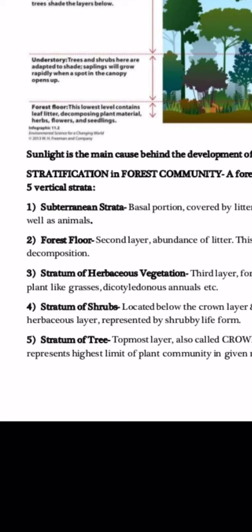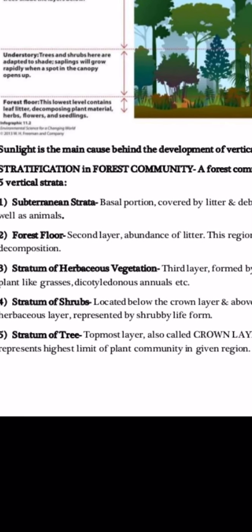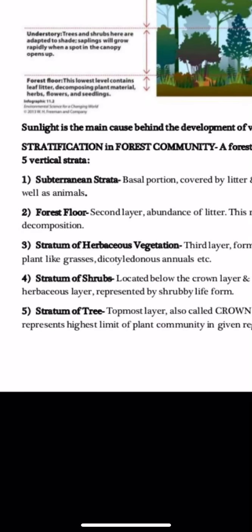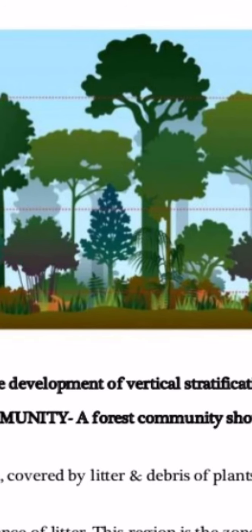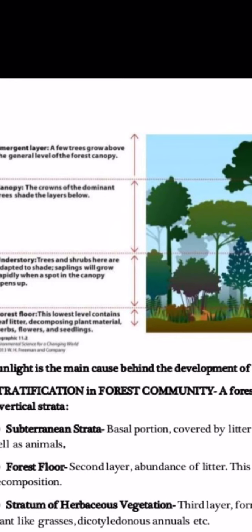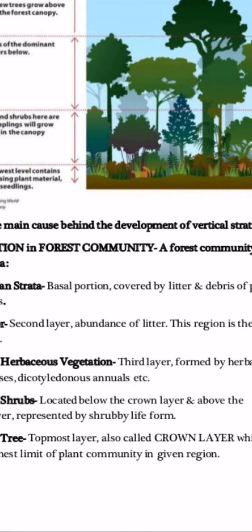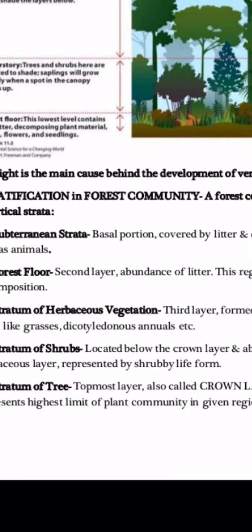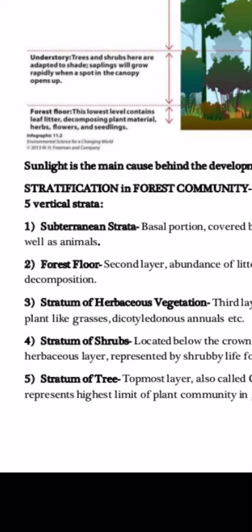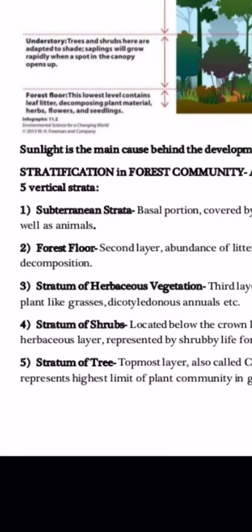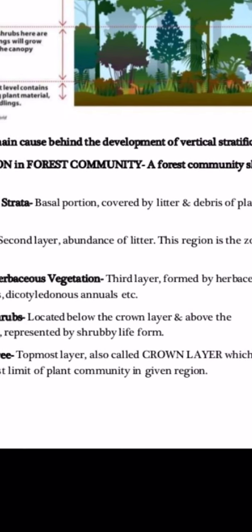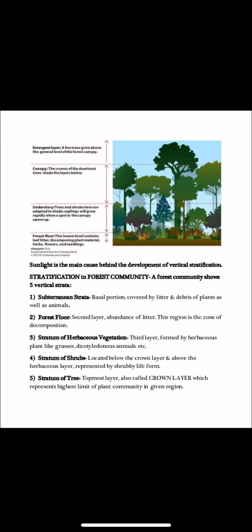The third stratum, above the forest floor, is the herbaceous vegetation layer, formed by herbaceous plants like grasses and dicotyledonous annuals. The fourth is the shrub layer, located below the crown layer and above the herbaceous layer, represented by shrubby life forms. The fifth and topmost is the tree or crown layer, which represents the highest limit of plant community in a region. This is the vertical structure of a community.